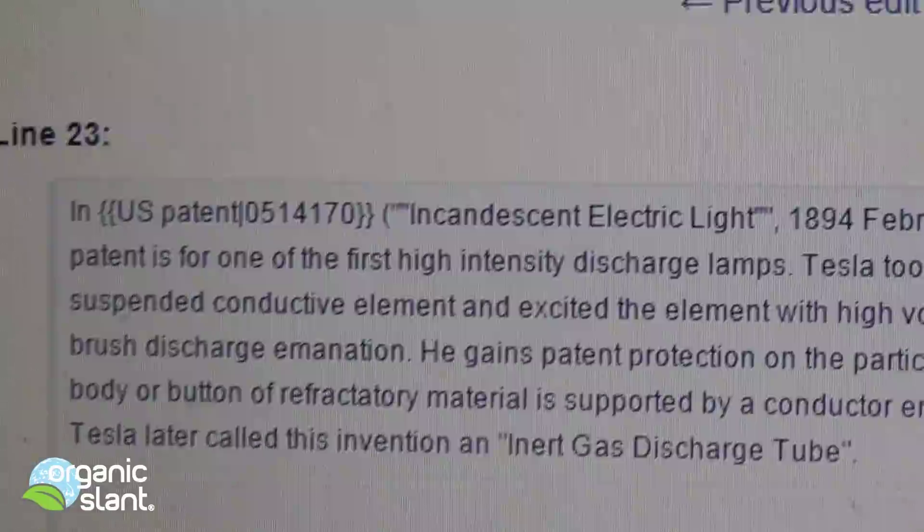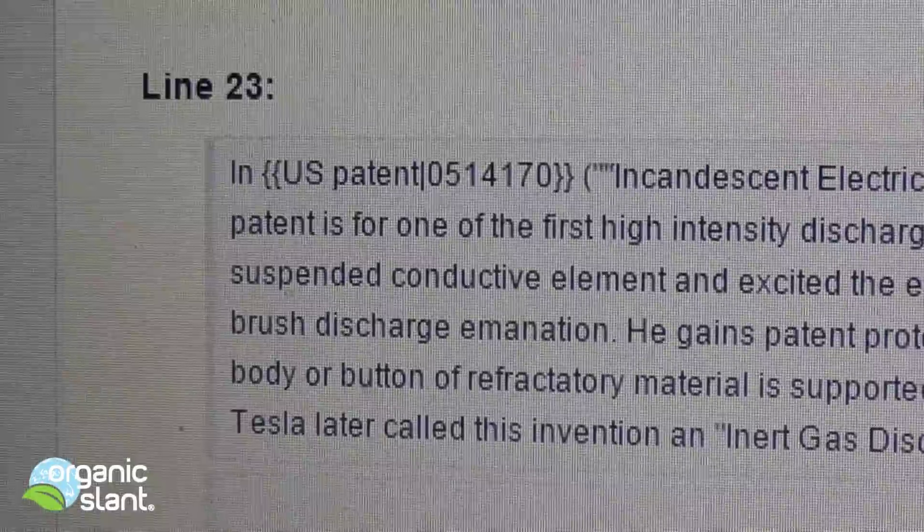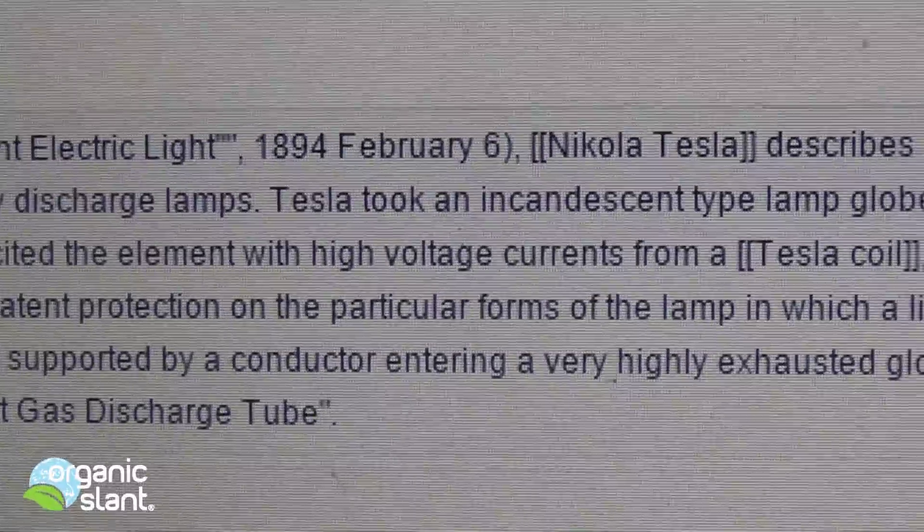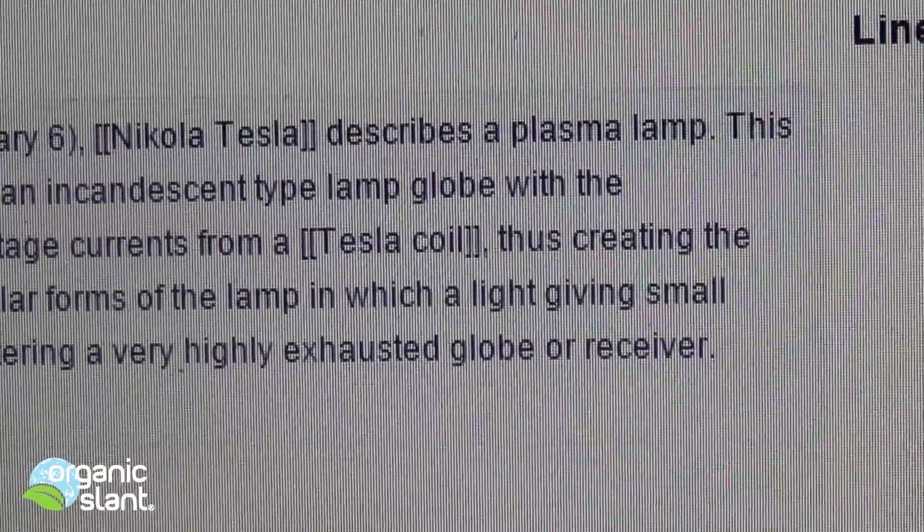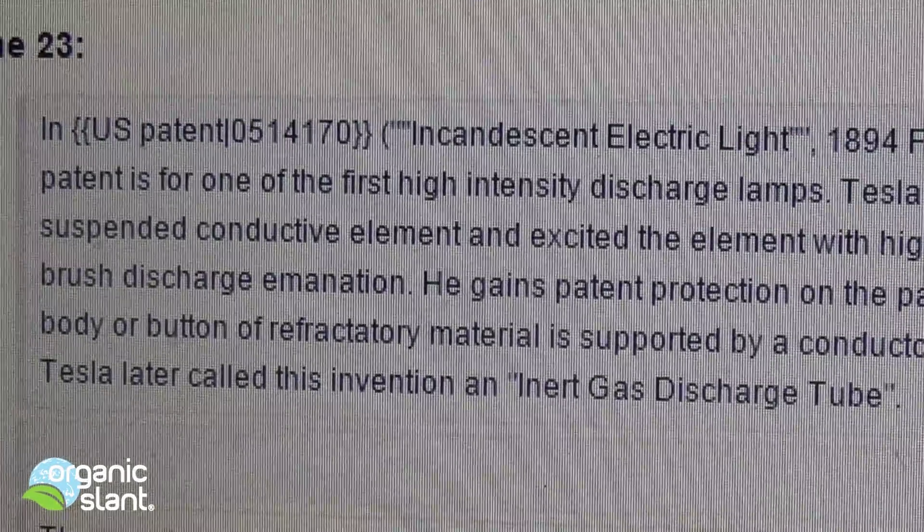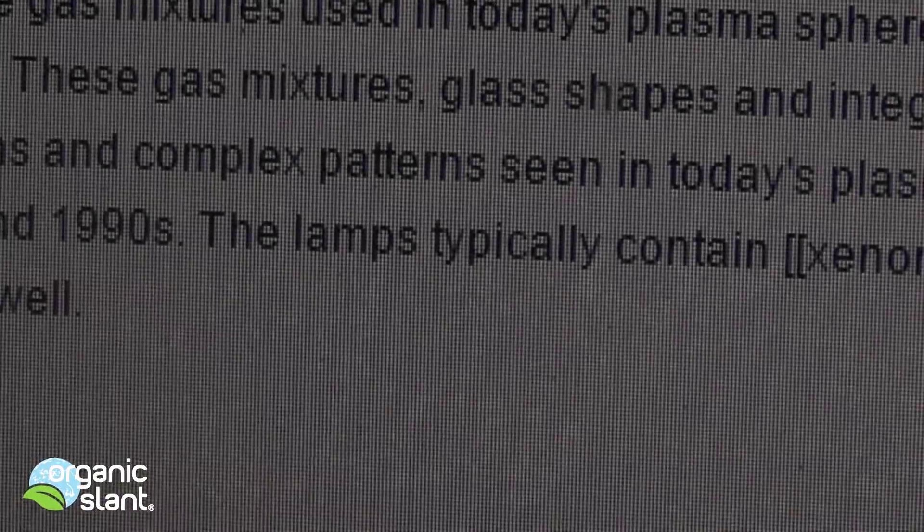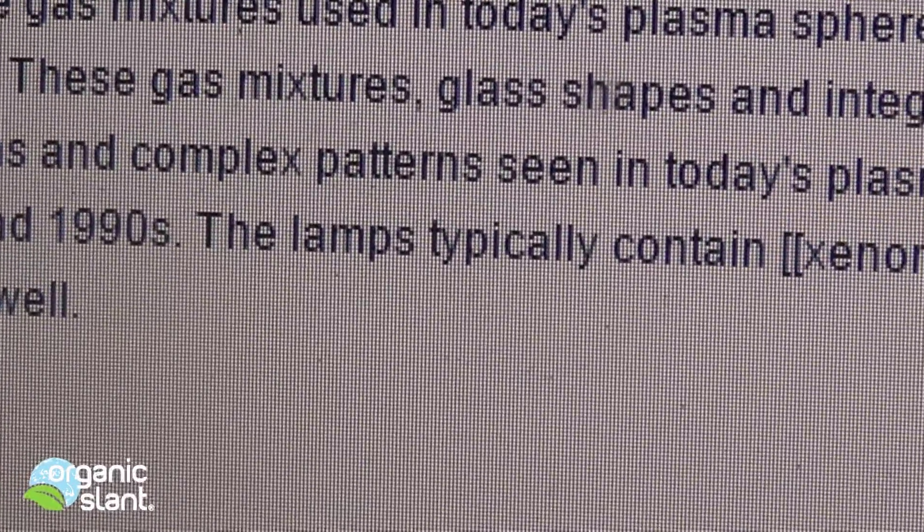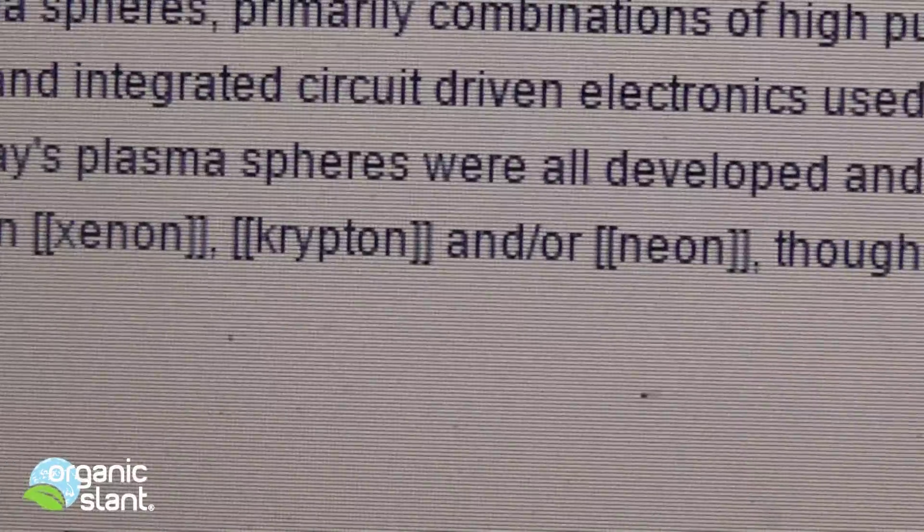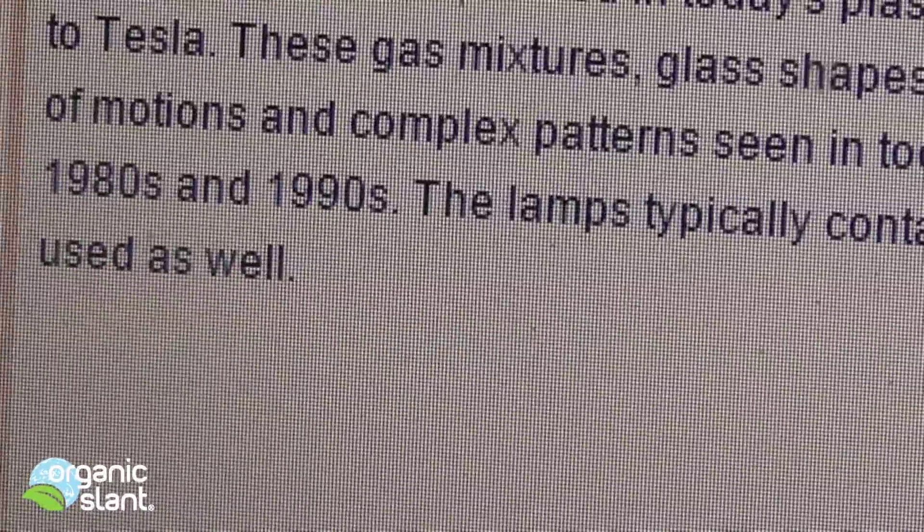And last but not least is this plasma globe US patent, incandescent electric light 1894 February 6th, Nikola Tesla describes this plasma lamp. This patent is for one of the first high intensity discharge lamps. My conclusion on this plasma lamp is where it states here the lamps typically contain xenon, krypton and or neon though a number of other gases can be used as well.